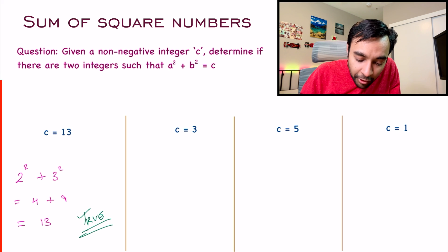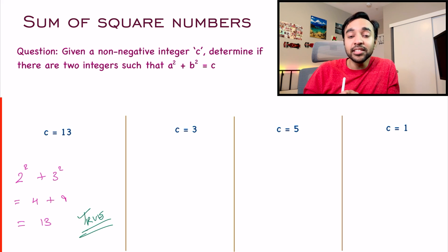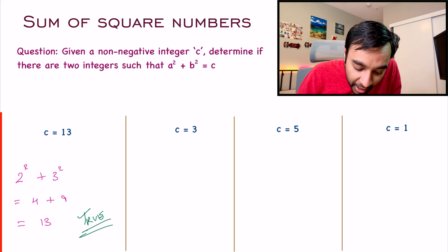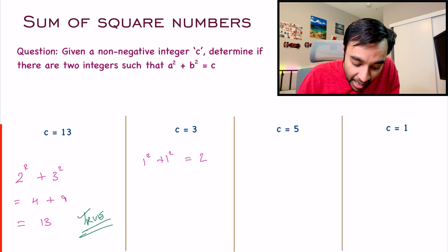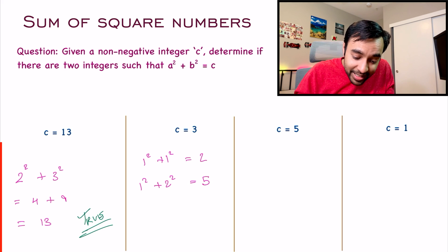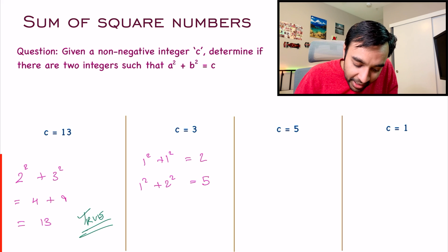Similarly, if you look at the second test case, c is equal to 3. Now, there does not exist any two integers upon which you add, you get the number 3. For example, 1² + 1² will be 2, and 1² + 2² ends up becoming 5. So this value of c can never be possible. For the second test case, you need to return false as your answer.